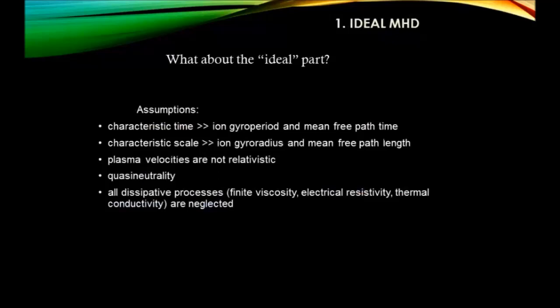The 'ideal' part means it starts from quite a lot of assumptions, but in the areas where it applies it describes things really well. The characteristic time must be much larger than the mean free path time, the scale must be larger than the mean free path length, velocities are not relativistic, and there's the quasi-neutrality assumption - ions and electrons are in the same proportions. All dissipative processes - viscosity, resistivity, thermal conductivity - are neglected.